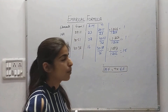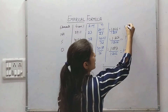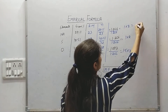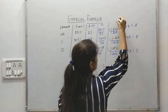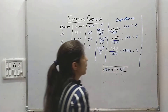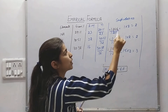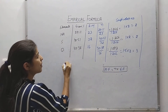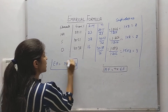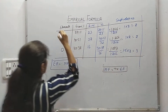Since fractions are not used in formulas, we divide all values by the smallest term. On dividing, we get 1, 1, and 1.5. Since 1.5 is still a fraction, we multiply all by 2: giving 2, 2, and 3. This is the simplest whole number ratio. So the empirical formula is Na2SO3.